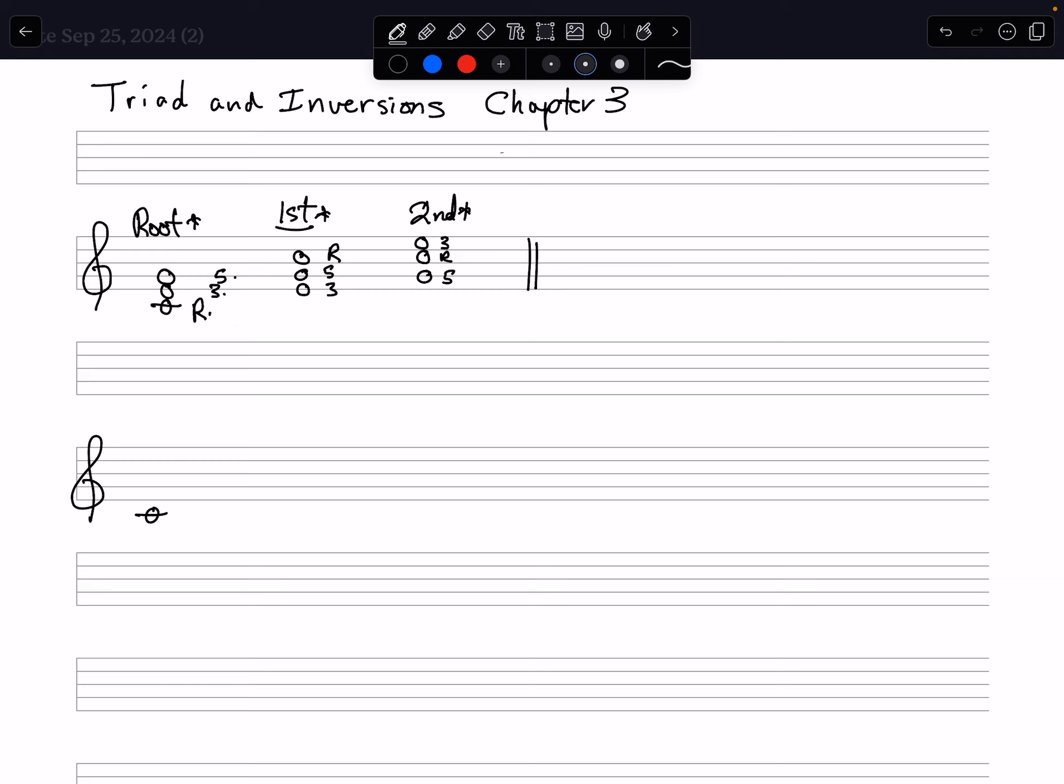You have a C major seventh, and this is going to be in root position. If you look at it, it's the root of the chord, third, fifth, and seventh. The order is going to change. I'm going to put the third on the bottom, the fifth, the seventh. Now watch what I do with the root—I'm going to move it to the side so they don't conflict. So it's third, fifth, seventh, and root. This is now first inversion of a seventh chord.